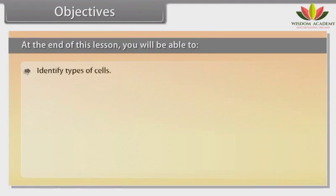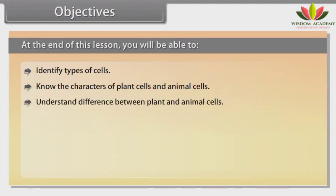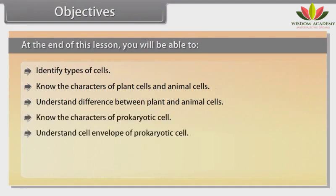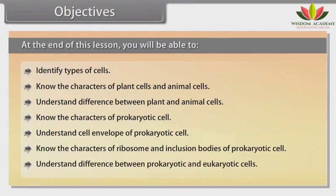At the end of this lesson, you will be able to identify types of cells, know the characters of plant cells and animal cells, understand the difference between plant and animal cells, know the characters of prokaryotic cells, understand the cell envelope of prokaryotic cells, know the characters of ribosomes and inclusion bodies of prokaryotic cells, and understand the difference between prokaryotic and eukaryotic cells.